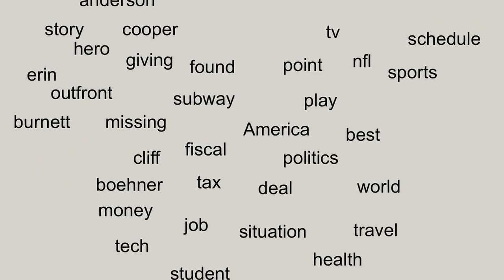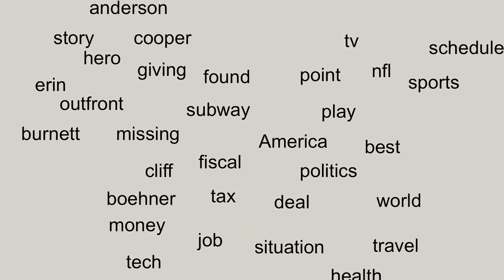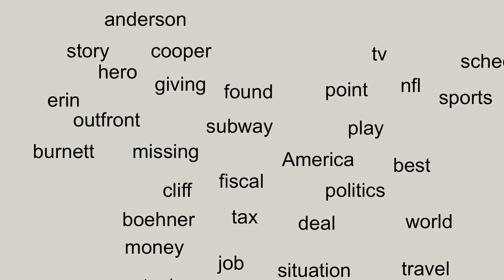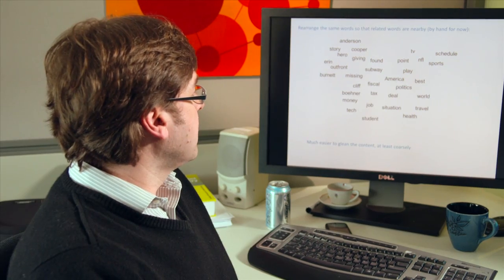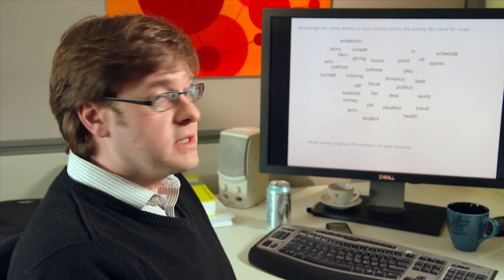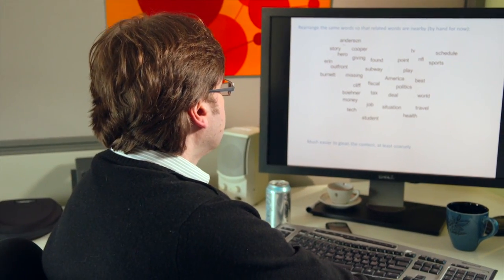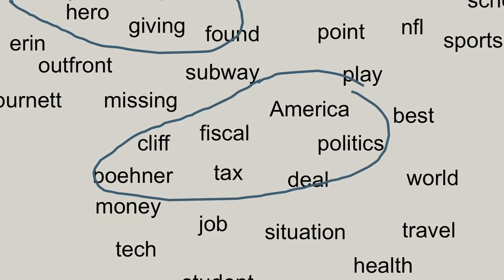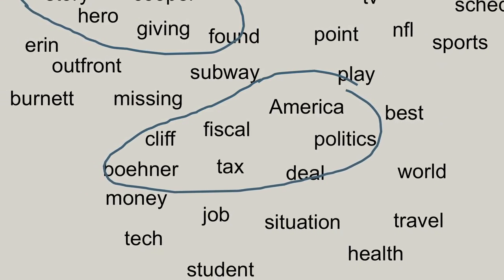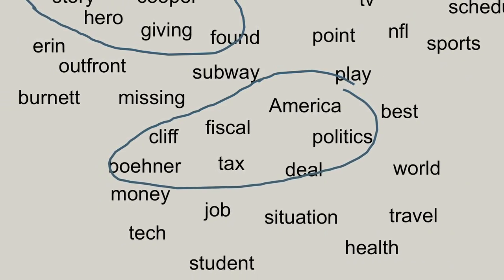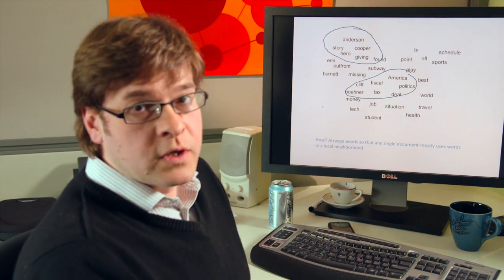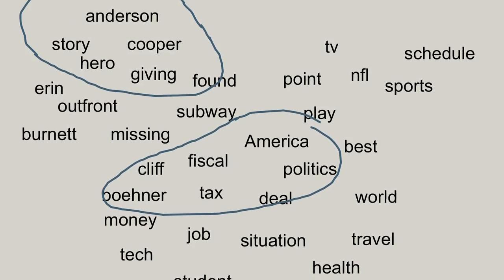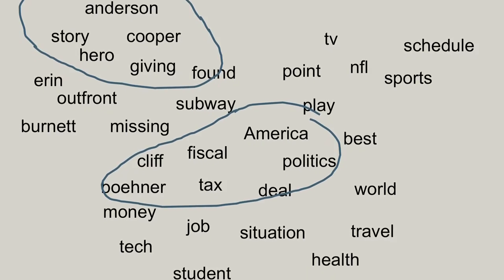If we arrange the same words in a spatial arrangement so that related words are found nearby, then the whole map is much more easy to consume. You can find, for example, words like 'cliff' and 'fiscal' next to each other. The way this is arranged is so that in any local neighborhood you look at, the words that you find there tend to correspond to the set of words you would find in a single news story.